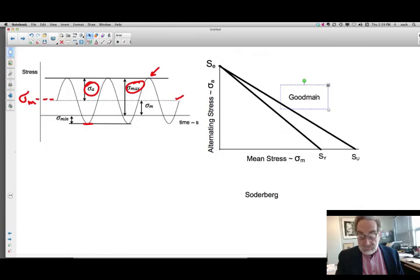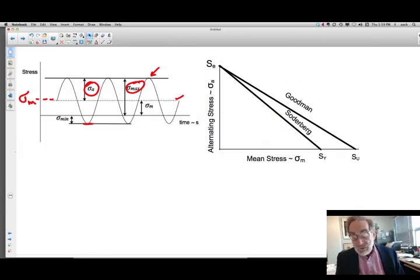So the Goodman diagram is this one and the Soderberg diagram is this one. The names are sort of important, but the idea is that they're based on having the mean stress at the yield strength or the ultimate strength, and you only get one cycle at these situations to be down here at this very corner of alternating stress.